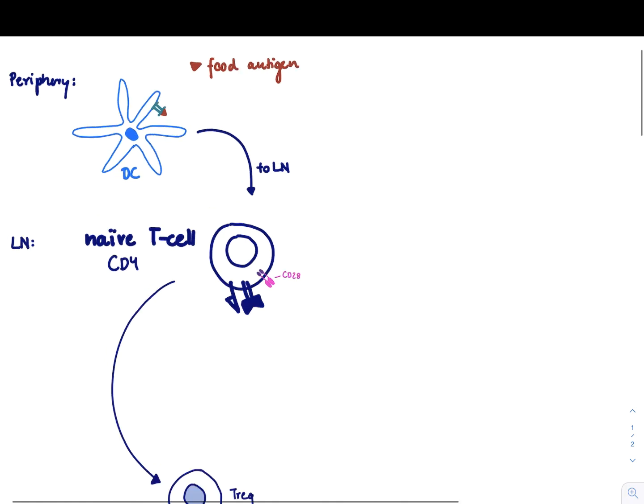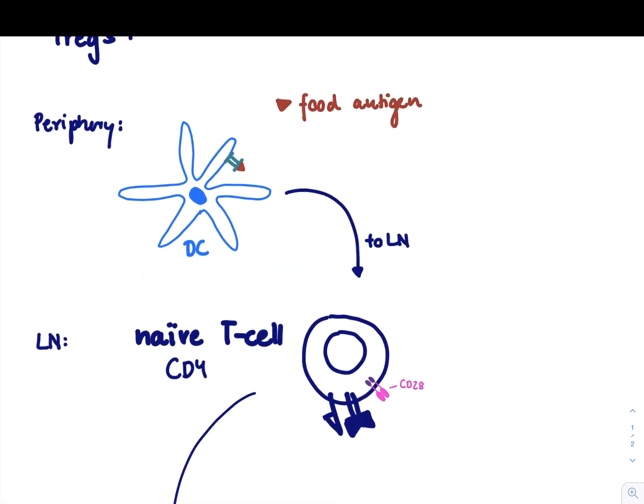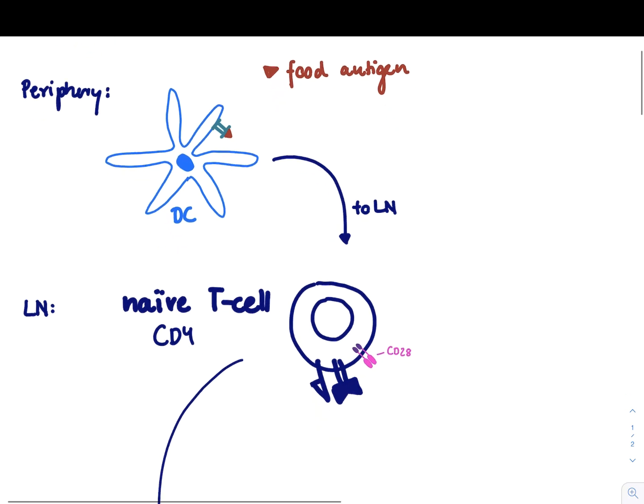It all needs to start in the periphery because now we need a DC to activate this naive T-cell. So let's suppose there is no infection going on. This dendritic cell just eats up stuff that it can find. Therefore it will also eat up, for example, food antigens and present it via MHC2. And eventually it might get into the lymph node.